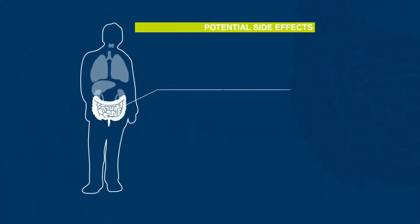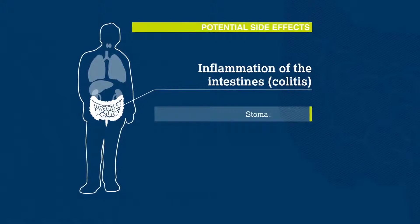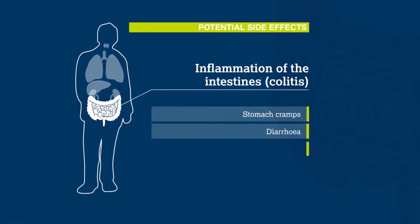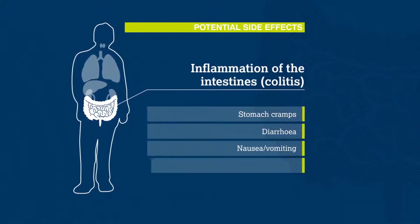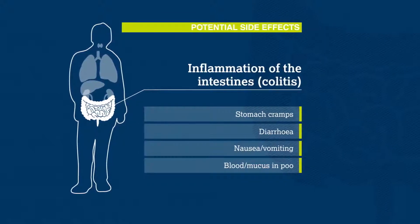Other patients may have intestinal problems, such as stomach cramps, diarrhea, or nausea and vomiting. Some might find blood or mucus in their poo.